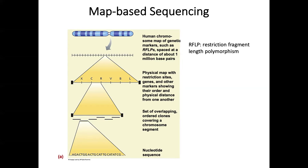However, there were also disadvantages. Making clones and generating genome maps takes a long time. Also, some parts of chromosomes, such as centromeres, contain long repetitive sequences, which make them difficult to cut and clone.